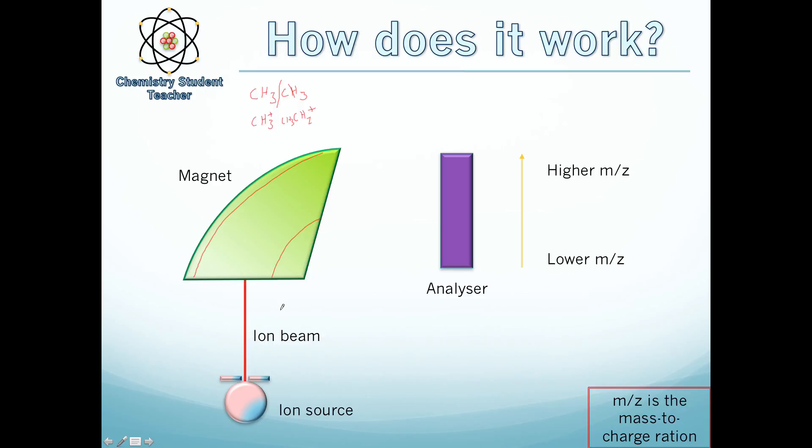Now this beam is full of all different fragments, so we may have a CH3+ fragment, we could have the CH3CH2+, we could have a CH2+, and things like that. Just a mixture of all the possible ions that we can get.